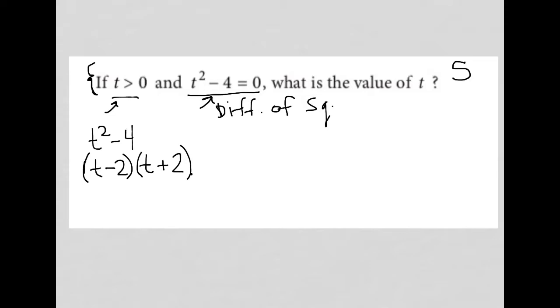So we're told that t squared minus 4 equals 0, so I can say that t minus 2 times t plus 2 is equal to 0. So then to solve for t,